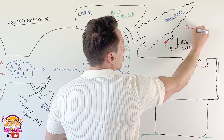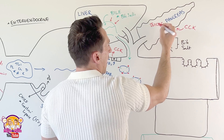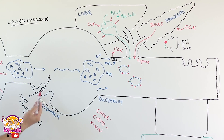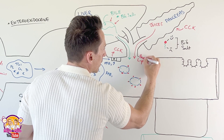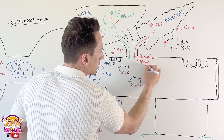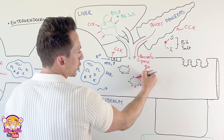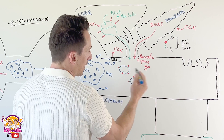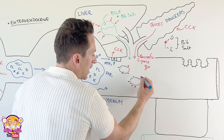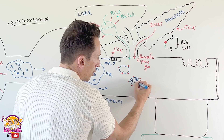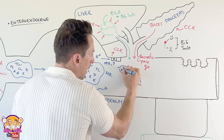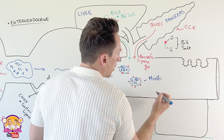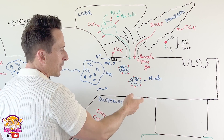CCK also travels to the pancreas to tell it to release its pancreatic juices. One of these is pancreatic lipase. So we've had lingual lipase, gastric lipase, and now pancreatic lipase — molecular scissors that can now do a more efficient job of chopping up these triglycerides. What we end up forming is a collection of bile salts surrounding fatty acids, glycerol, cholesterol, vitamins D, E, K, A, and phospholipids. These things are called micelles — effectively broken-down bits of fat surrounded by bile salts.